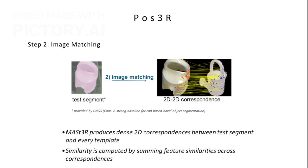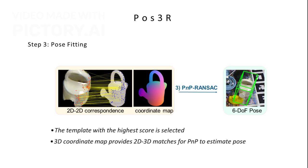Step 2 is image matching. We use MASTER to compute dense 2D correspondences between the test image and each template. The similarity between them is then scored by summing feature similarities across the matched points, helping us identify the best fitting template without any learning. Step 3 is pose fitting. We take the highest scoring template and use its known 3D coordinates to compute 2D-3D correspondences. Then, using PNP, we estimate the full 6D pose of the object. This step gives us accurate pose without requiring any refinement or training.